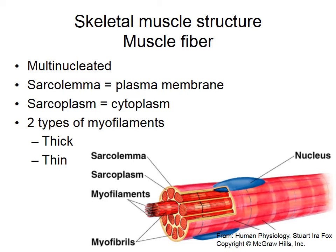Muscle fibers are multinucleated. The plasma membrane of muscle fibers is called the sarcolemma. The cytoplasm inside muscle fibers is called the sarcoplasm. Muscle fibers are filled with myofilaments, which come in thick and thin varieties.